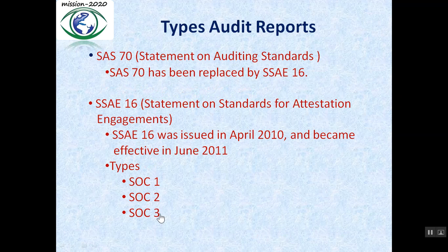SAS 70 was an auditing standard developed by the American Institute of Certified Public Accountants in 1992. SAS 70 has since been replaced by SSAE 16, which was also developed by AICPA. SSAE 16 was issued in April 2010 and became effective in June 2018.